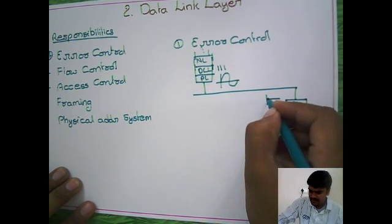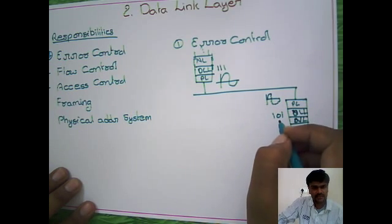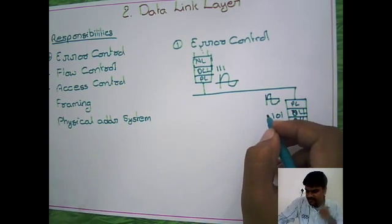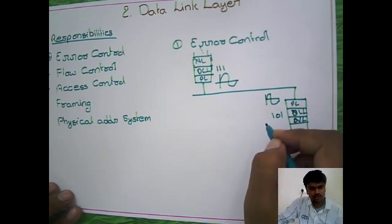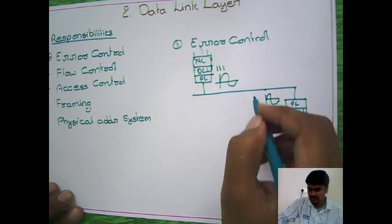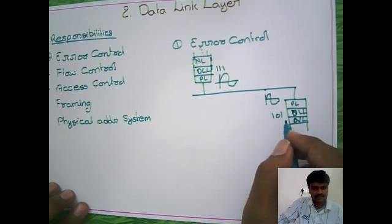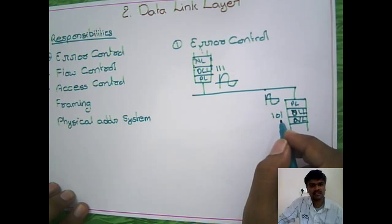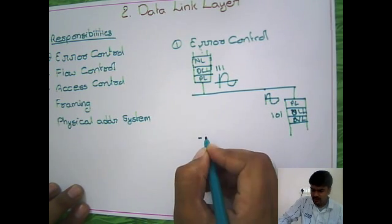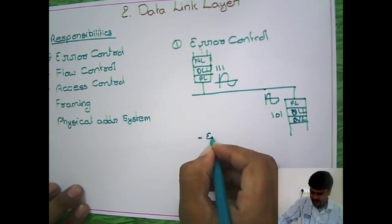This means due to external noise, the data is corrupted. You didn't receive the actual message sent by the source. In between, due to external disturbances or noises, your data is corrupted. The destination has to identify that this data is corrupted. If the destination does not receive the original data, then it needs to identify the error. This functionality is error detection.